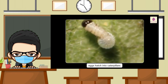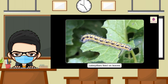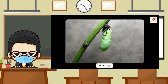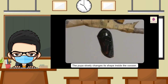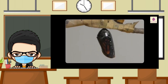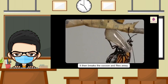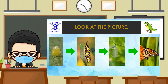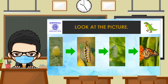Let's watch the video of a monarch butterfly. This video shows the different stages a butterfly undergoes in its life cycle. It starts with an egg, then it changes into a caterpillar, then a pupa, and finally a butterfly.